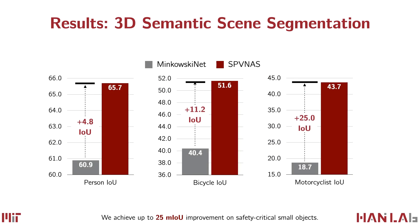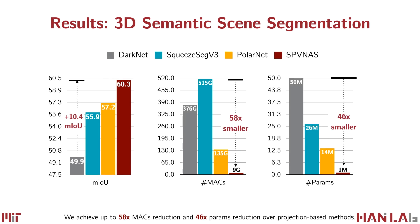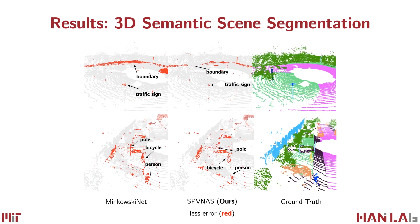On small objects, our SPV-NAS achieves 5% to 25% IOU improvement over MinkowskiNet. This will potentially make our SPV-NAS much safer than MinkowskiNet when deployed on real cars. We also compare our SPV-NAS with projection-based methods. While achieving 3% to 10% IOU improvement, our SPV-NAS reduces the number of MACs by up to 58 times and the number of parameters by up to 46 times. We visualize the predictions of our SPV-NAS comparing with MinkowskiNet, and observe that less error is made on safety-critical small objects and boundary regions.